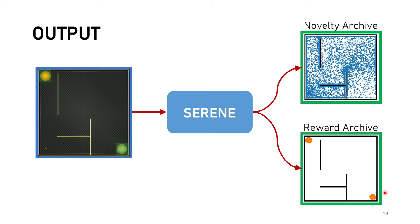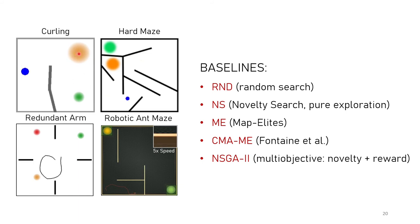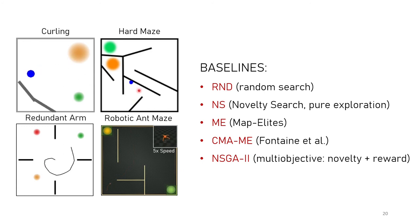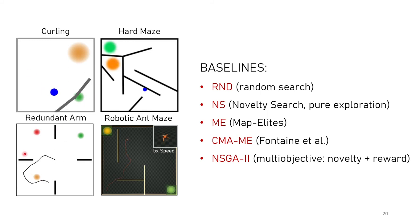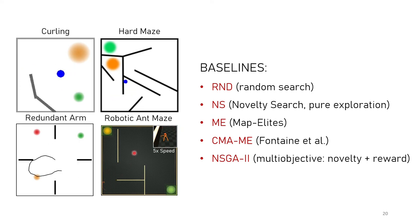We tested this algorithm on four different sparse reward environments, where reward areas are highlighted with circles and the reward is higher the closer we get to the center. The first is the curling environment, where a two-degrees-of-freedom arm pushes a ball on a table. Then the hard maze environment, where a two-wheeled robot navigates a maze to reach one of two rewarding areas. Then the redundant arm environment, where a 20-degrees-of-freedom arm places its end effector at all possible positions. Finally, the robotic hand maze, where a four-legged hand navigates a maze, discovers reward areas, and maximizes reward.